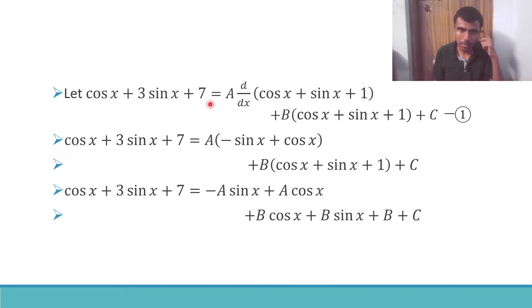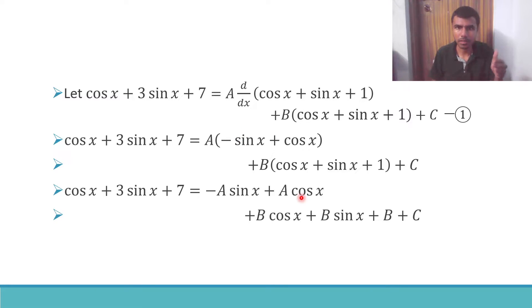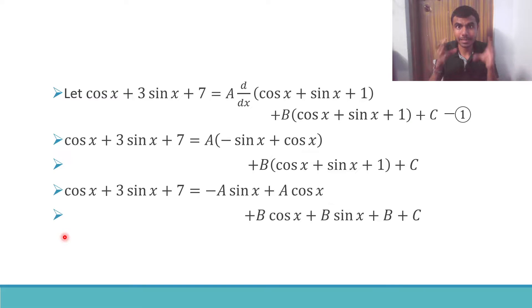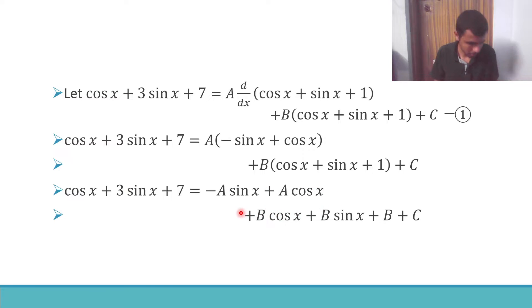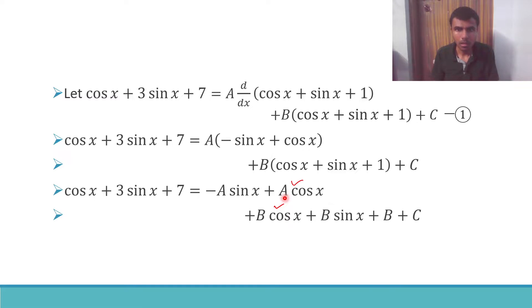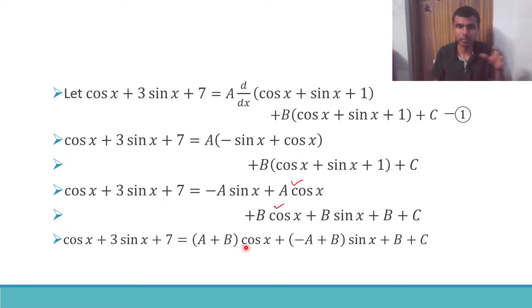Now I am going to take cos x common and then sin x common. In the LHS I have cos x, sin x, and a constant. If I take cos x common from the a cos x and b cos x terms, I will get (a + b) into cos x.